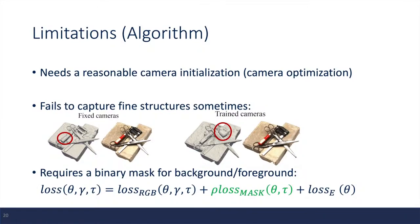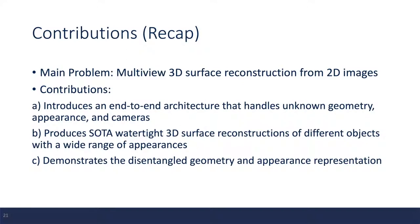The second limitation is that sometimes it still fails to capture the fine structure of the 3D model, especially in the trained camera cases. And the third limitation is that it requires a binary mask to be provided for each of the input image in order to calculate the loss properly. And that's the end of my presentation. Thank you for listening.